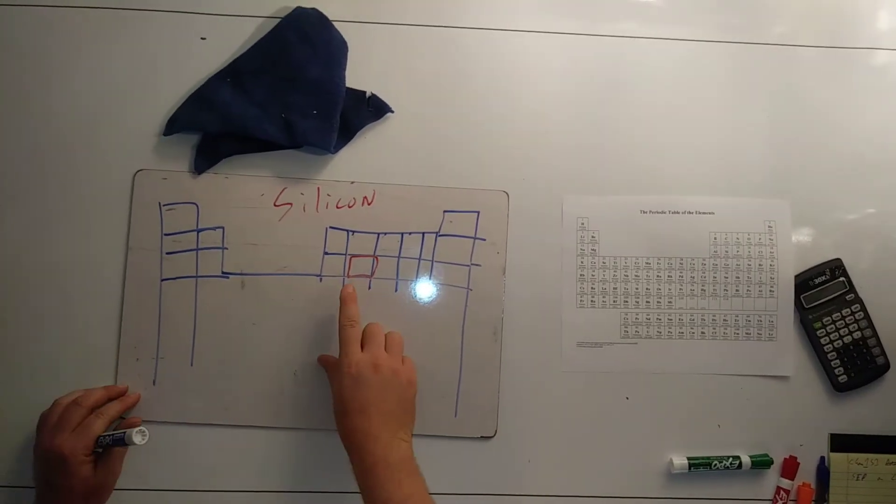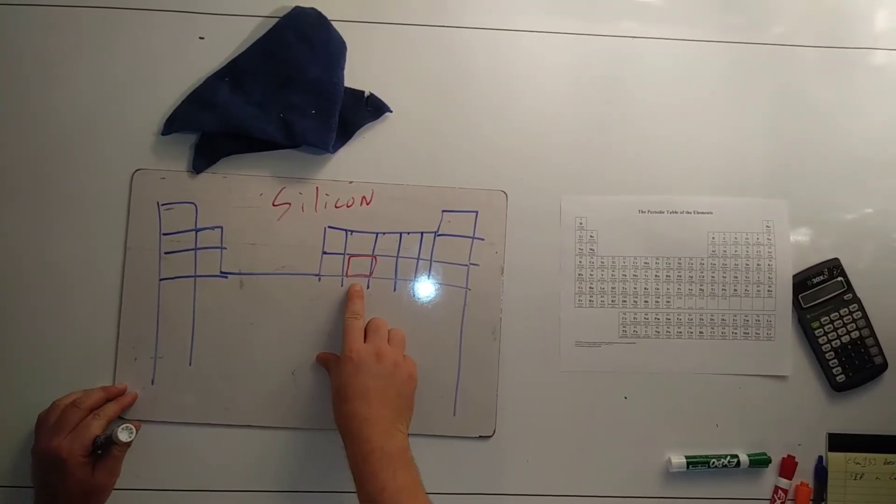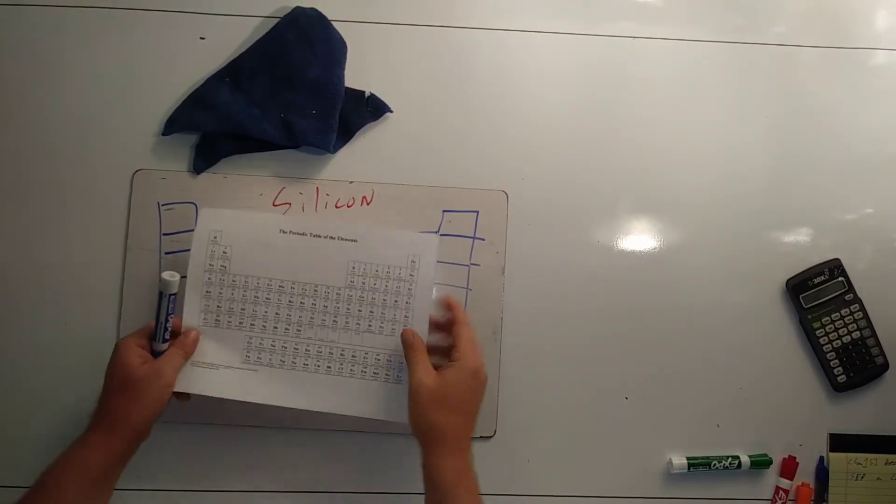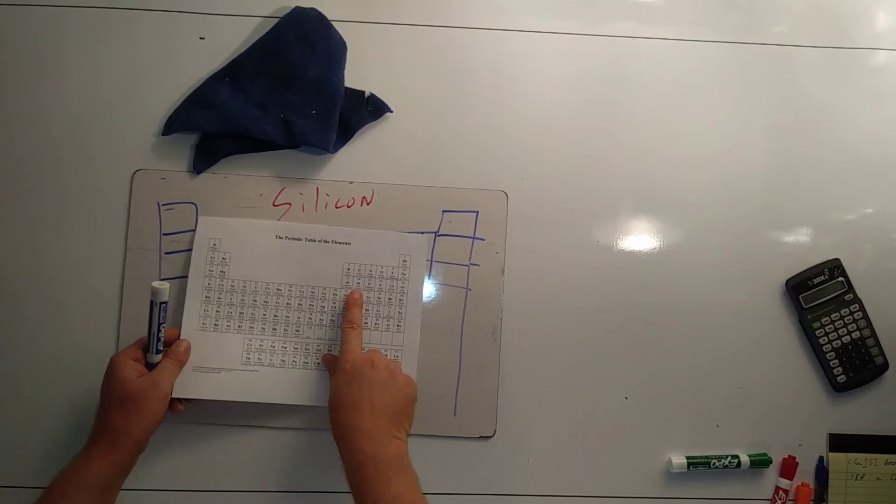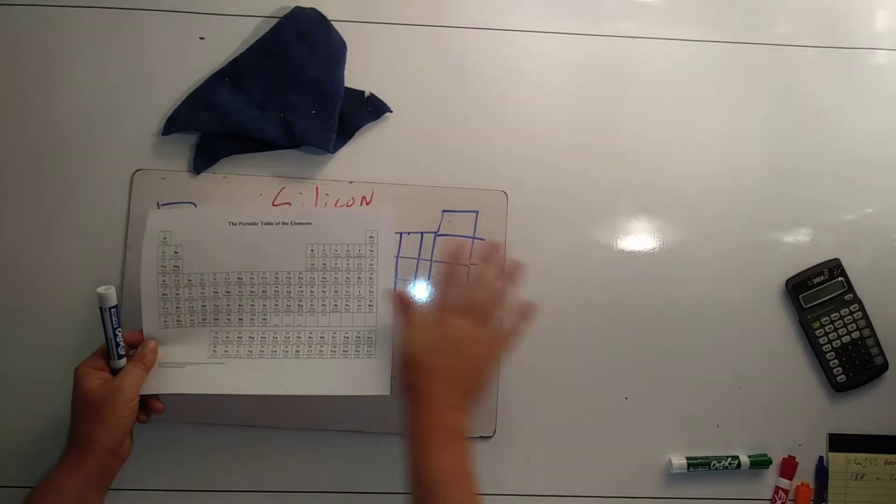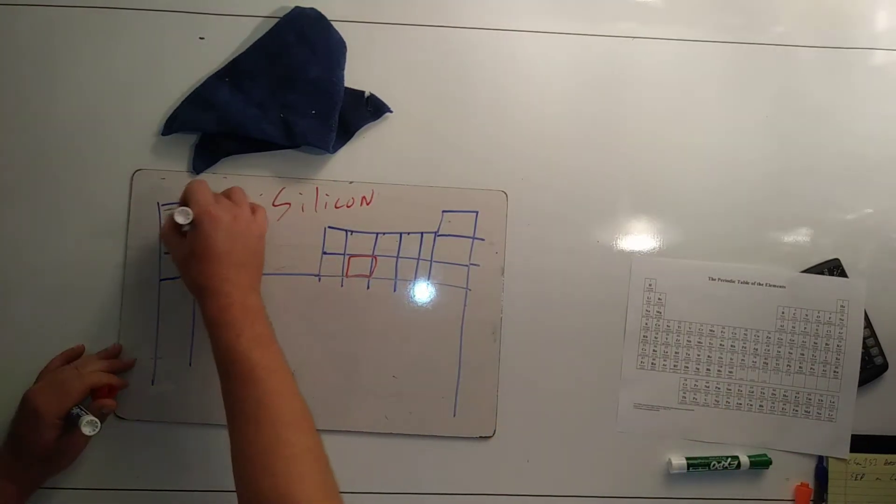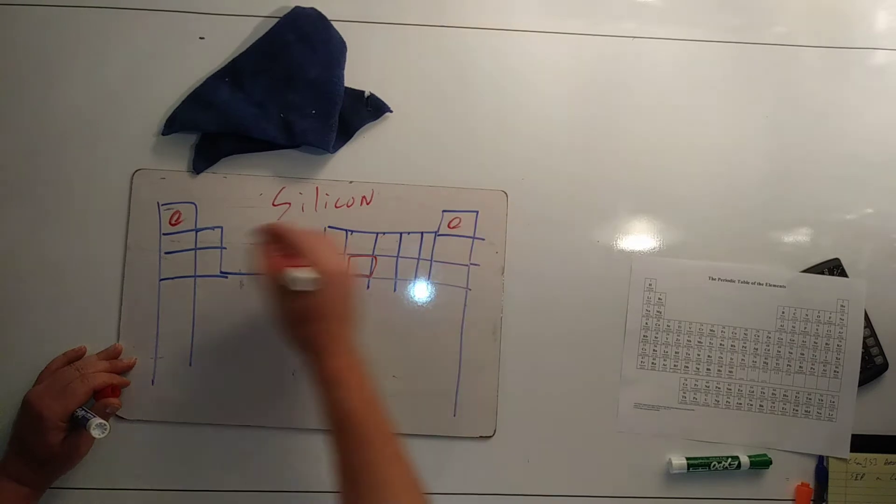We will draw an atomic picture of silicon's electrons labeling the core and valence shell. Silicon is found here on the periodic table and imagining this thing as a blank checkerboard to fill in our E's for electrons.